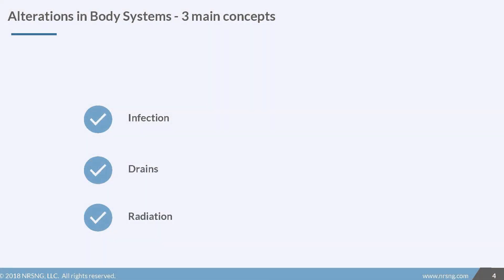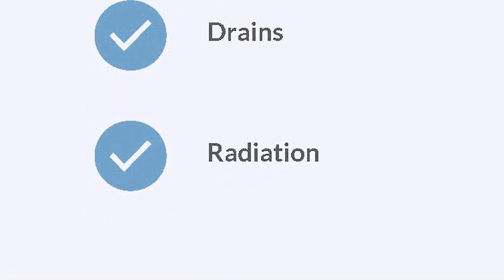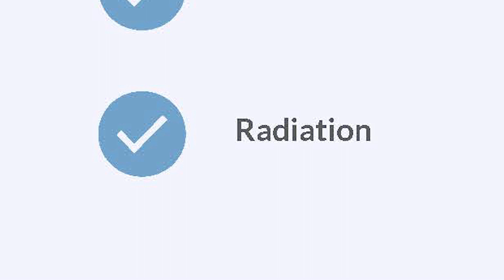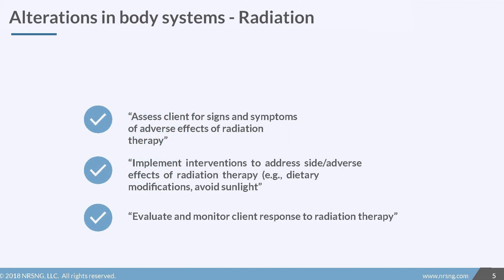What's great about the test plan in this particular section is that it tells you exactly what you need to know about alterations in body systems. There are three things: infections, drains, and radiation. Today, we're going to hone in on radiation specifically because it's a big part of this section.